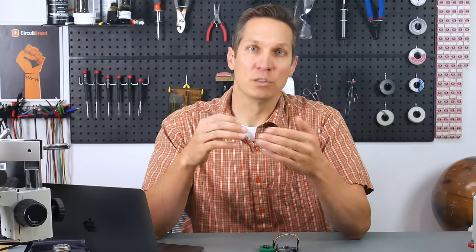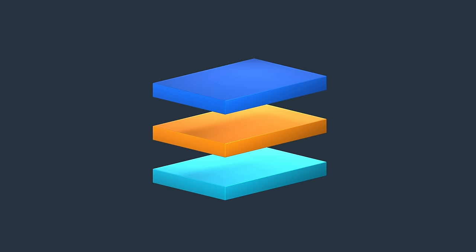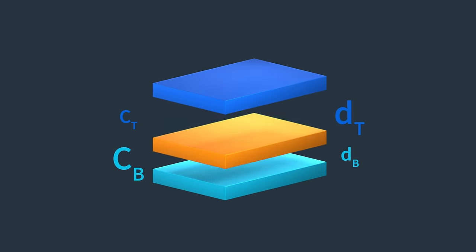If we apply a voltage to both the proof mass and the electrode while the sense fingers are perfectly centered, they'll have an equal buildup of capacitance. Now, if we move the middle plate closer to the bottom plate, the capacitance of the bottom capacitor increases while the top one decreases.